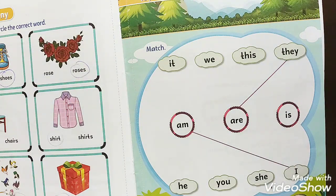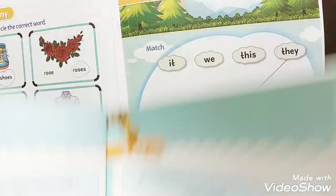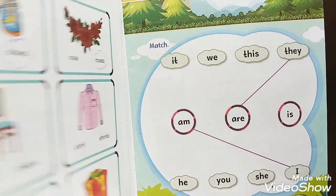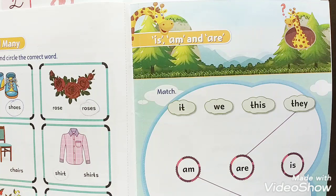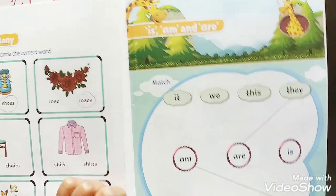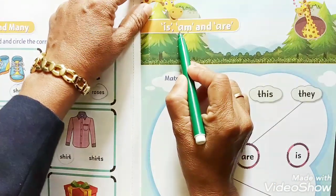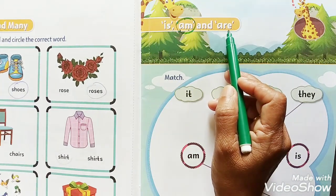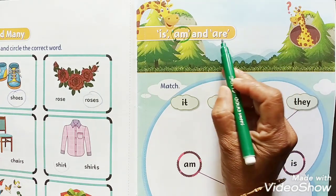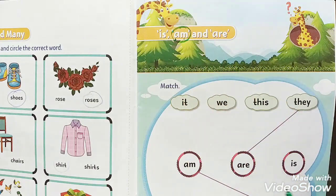From numeracy workbook, page number nineteen — is, am, and are. When do you use is? When do you use am? And when do you use are? Am is used whenever you have I — I am. And are is for they are, we are, you are — you can use are for those words. And is is used for the singular form of he, she, and it.